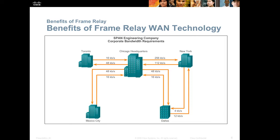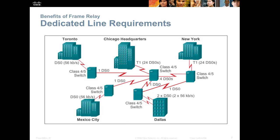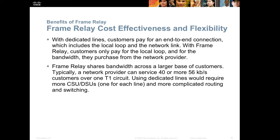For instance, you might purchase different bandwidths to different destinations. Here's an example where Toronto has purchased 16 kilobits per second up to Chicago headquarters and 48 kilobits per second down. You can see a similar scenario for Mexico City and Dallas. Dallas has a second circuit that connects directly to New York. This is all carried on one physical cable into the Frame Relay network. This is how you'd have to do it with dedicated lines. Frame Relay provides a more cost-effective and flexible way to interconnect multiple locations within your enterprise WAN.